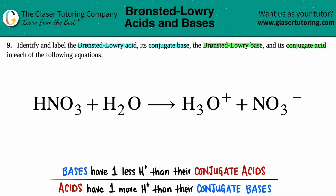I see that I have HNO3 over here, and I just have to find its pair. Here's NO3 — they look very similar, NO3 and NO3, so that's a pair. And if you find the correct pair, the other pair is right in front of you. There are only two pairs in an acid-base equation, and these go together: H2O and H3O+.